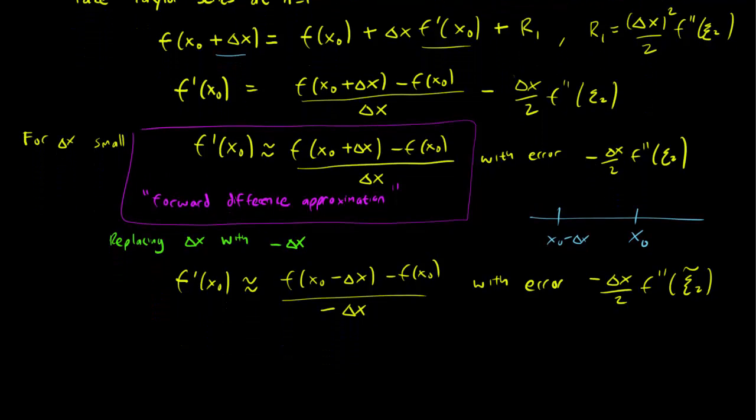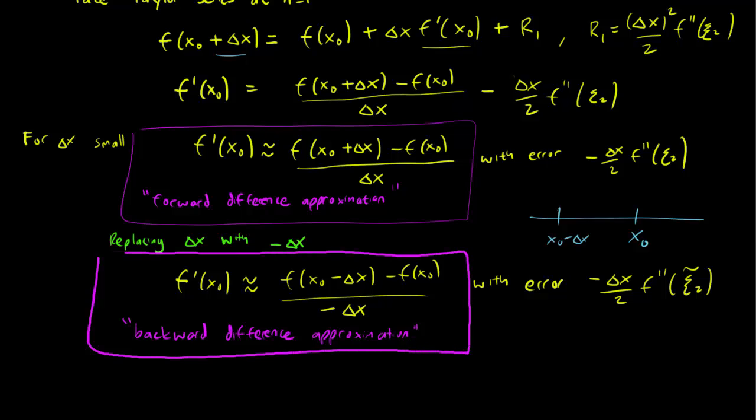Zeta 2 lies between x0 and x0 plus delta x, and zeta tilde 2 lies between x0 and x0 minus delta x. And this second approximation is known as the backward difference approximation.